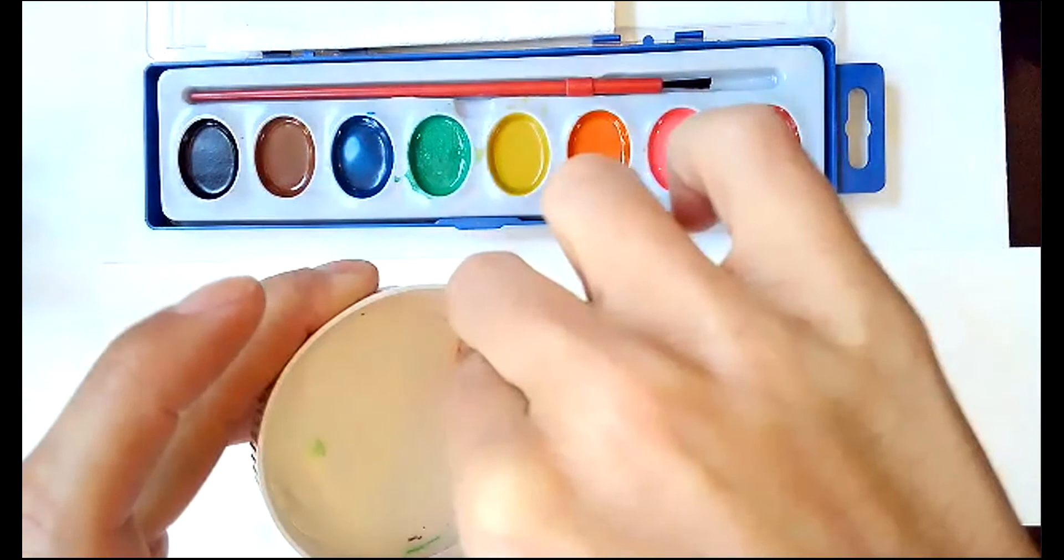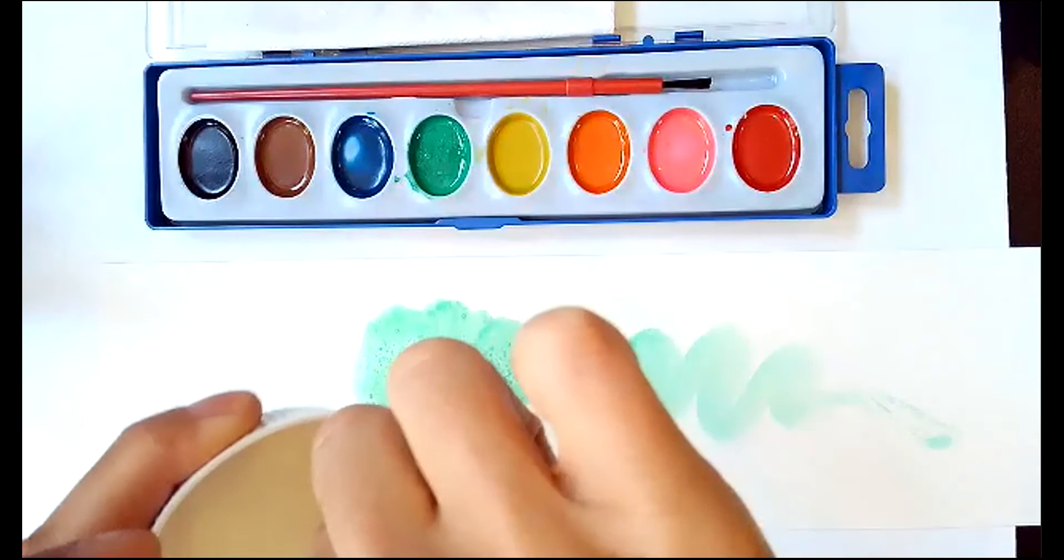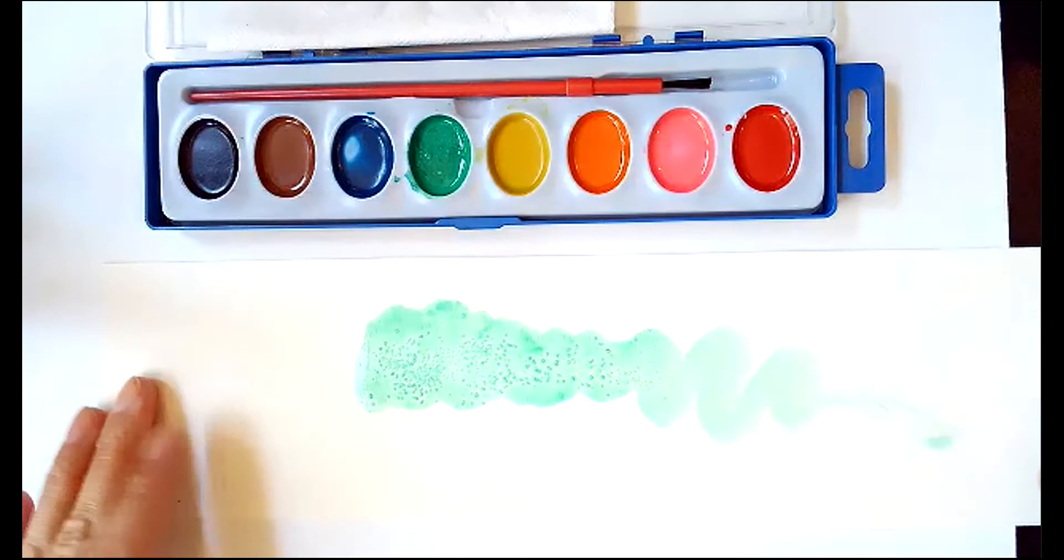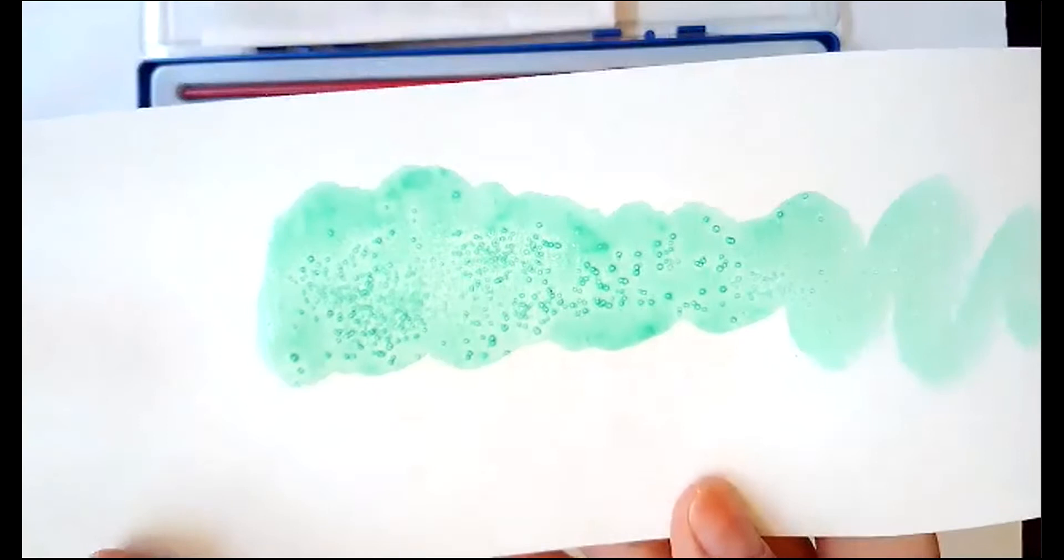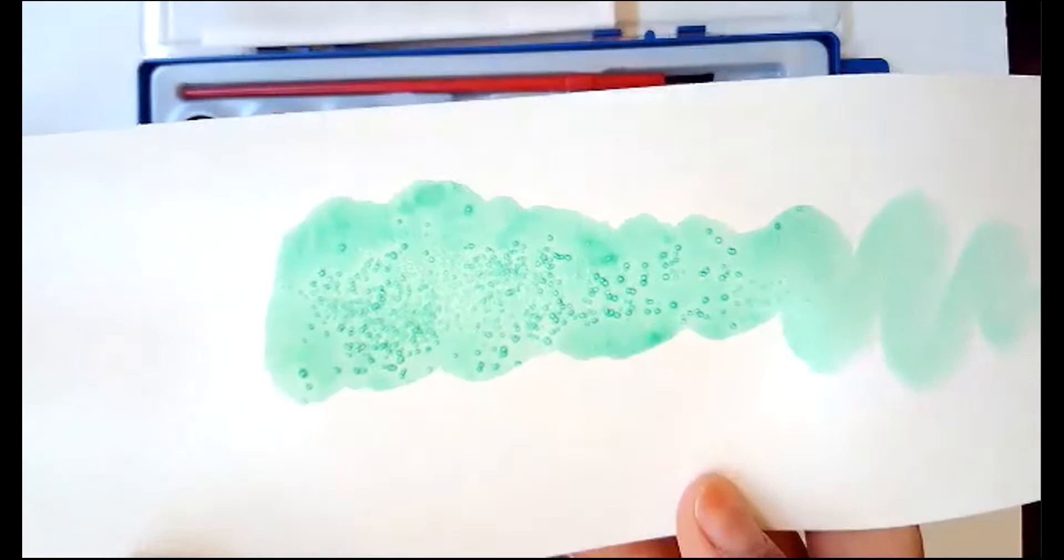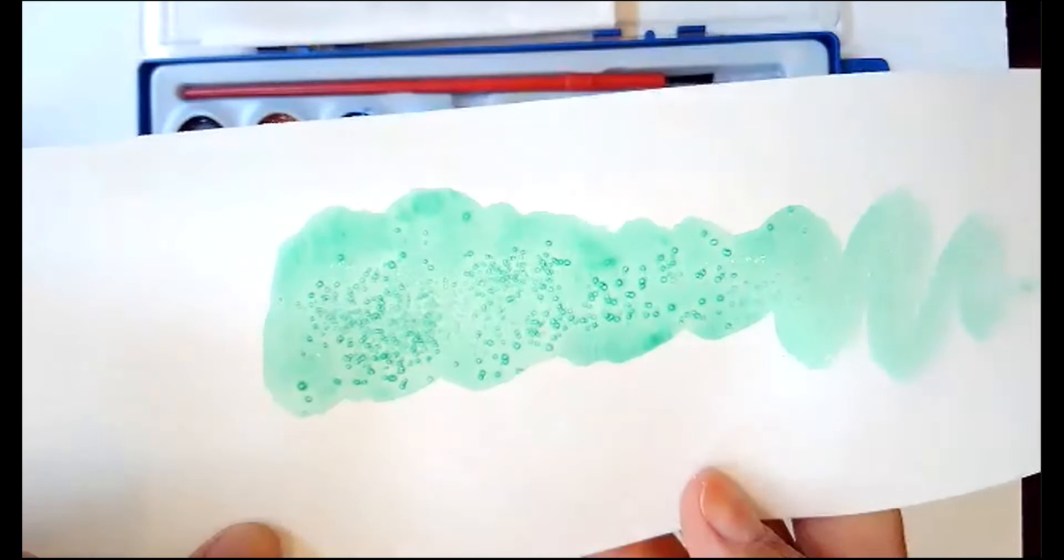Once we have that take a little bit of salt, a little pinch with your fingers and just sprinkle it onto the paint while it's wet. And then you'll start to notice once you get really close up that once this paint dries you'll end up with this stippled effect on there and the salt will actually adhere a little bit to the paper.